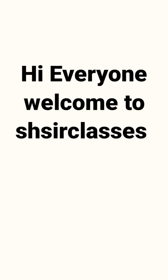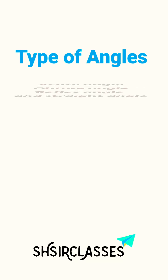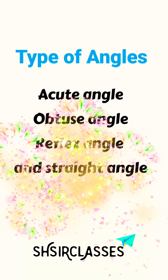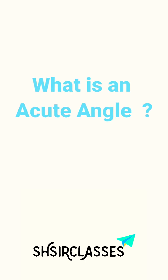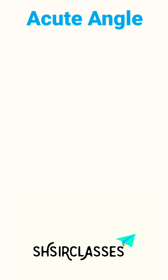Hi everyone, welcome to Sure Classes. In this short, we will learn four types of angles: acute angle, obtuse angle, reflex angle, and straight angle. First of all, what is an acute angle? An angle is said to be acute